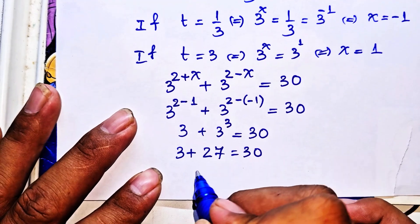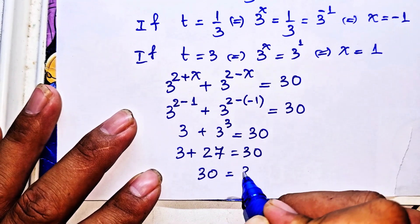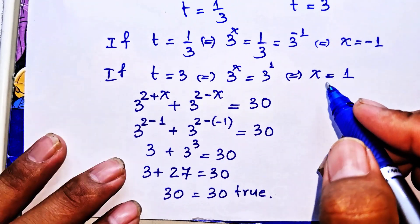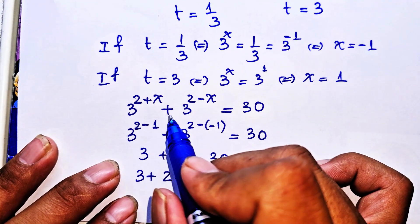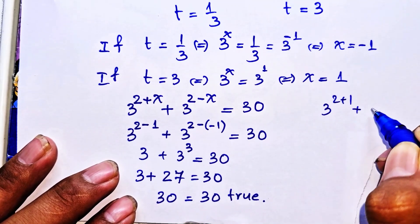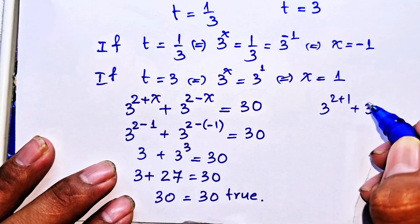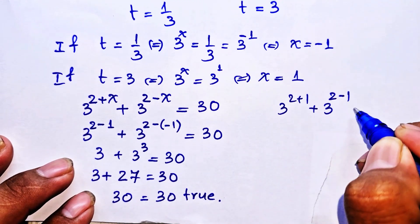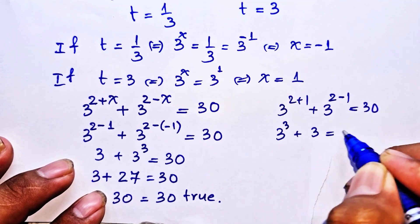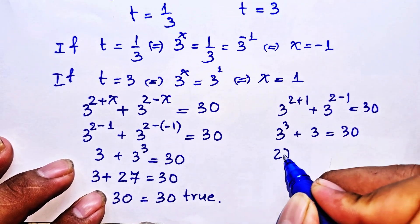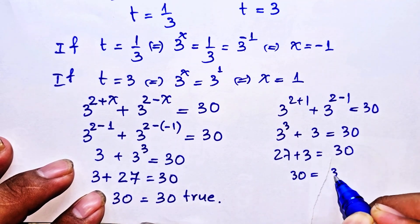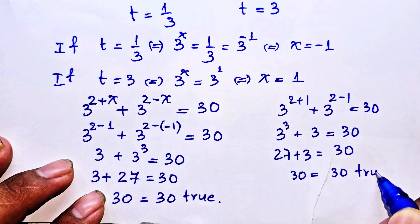For x = 1: 3^(2+1) + 3^(2−1) = 3^3 + 3^1 = 27 + 3 = 30. So 30 = 30, which is also true. Both solutions check out.